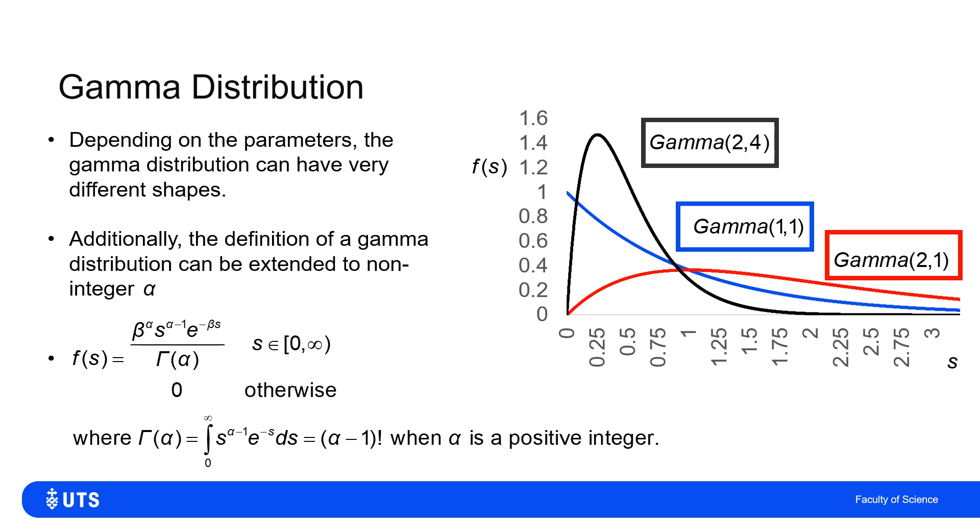And in this case, instead of having an alpha minus one factorial in the denominator, I've got a gamma alpha in the denominator, where the gamma function is, well, you can think of it as an extension of the factorial values for the non-integer points between. So gamma alpha is the same as alpha minus one factorial, if alpha is a positive integer.